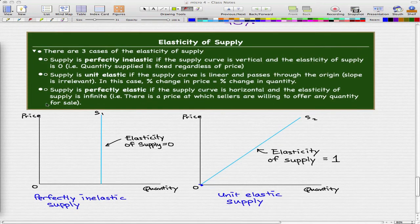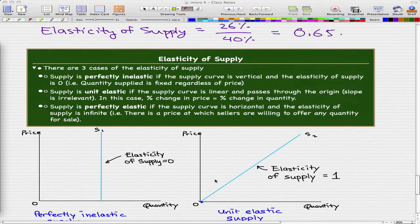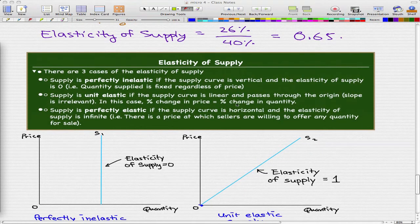And the second case is when supply is unit elastic. Supply is unit elastic if the supply curve is linear and it passes through the origin. The slope is irrelevant. And in this case, the percentage change in price is equal to the percentage change in quantity.